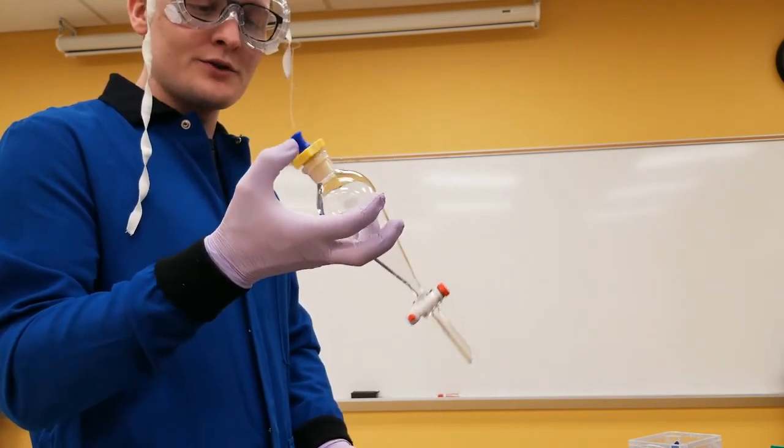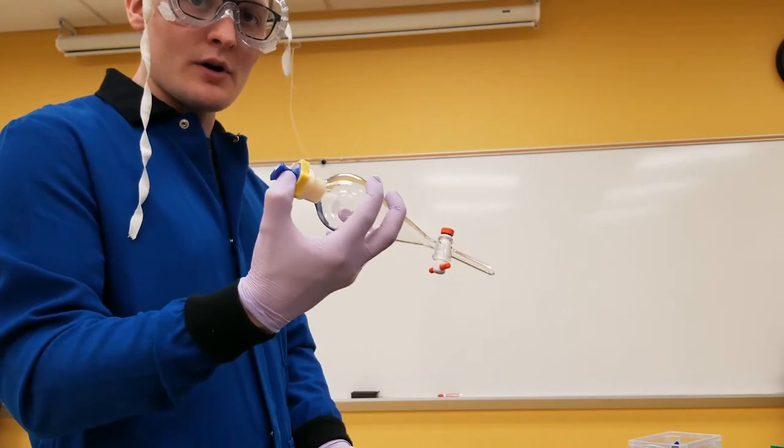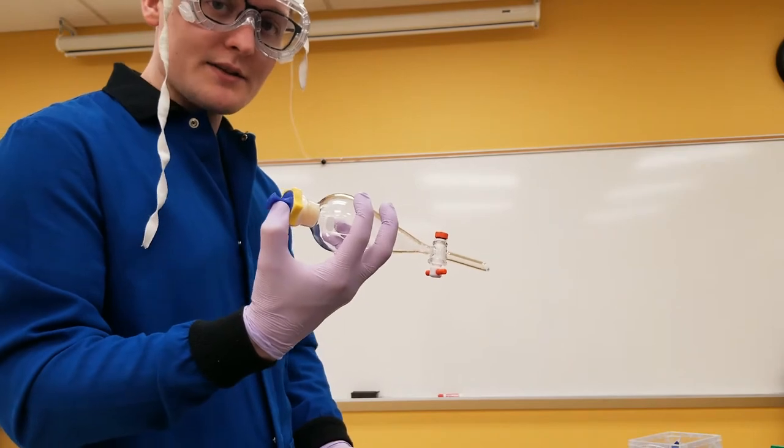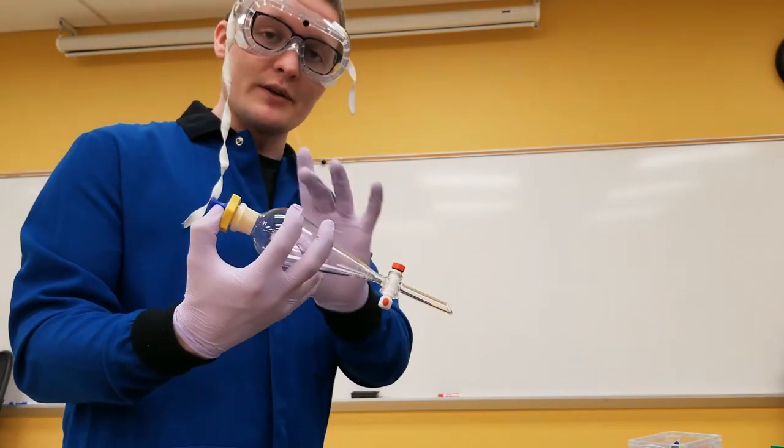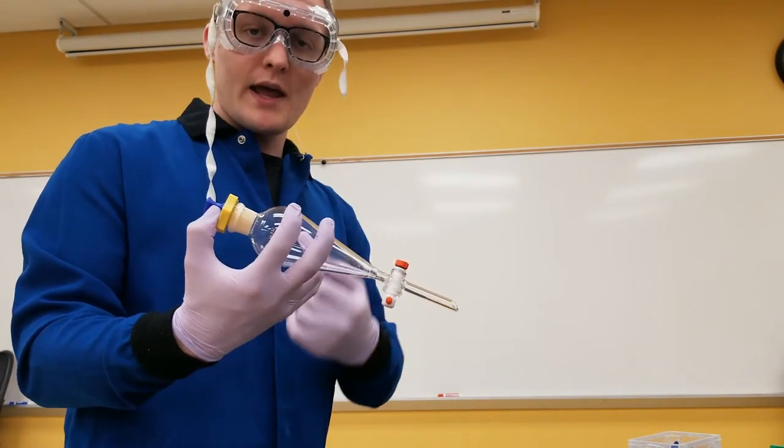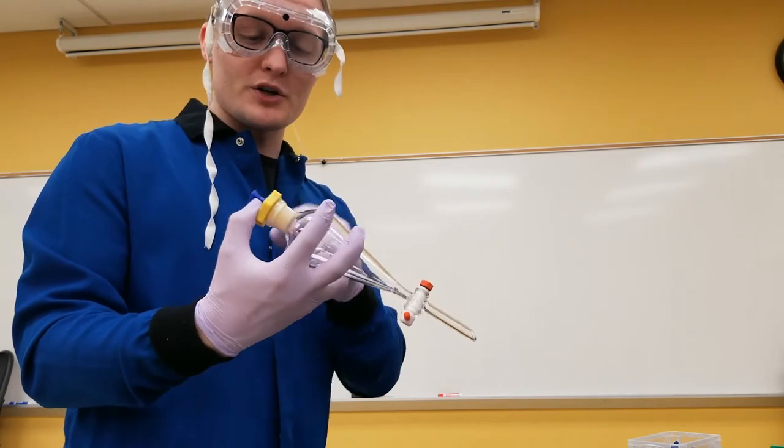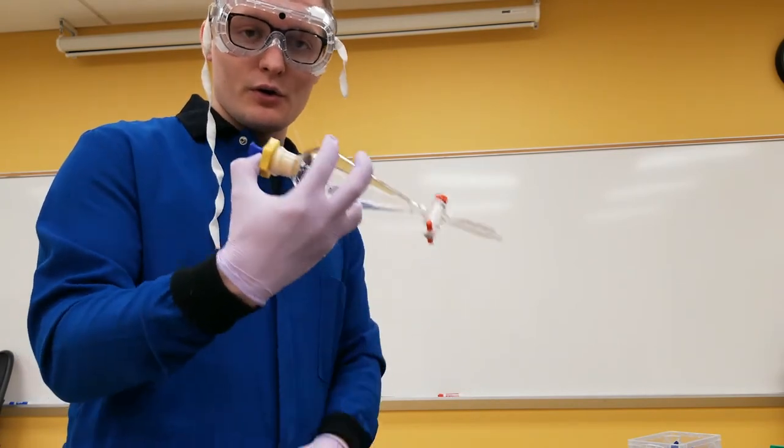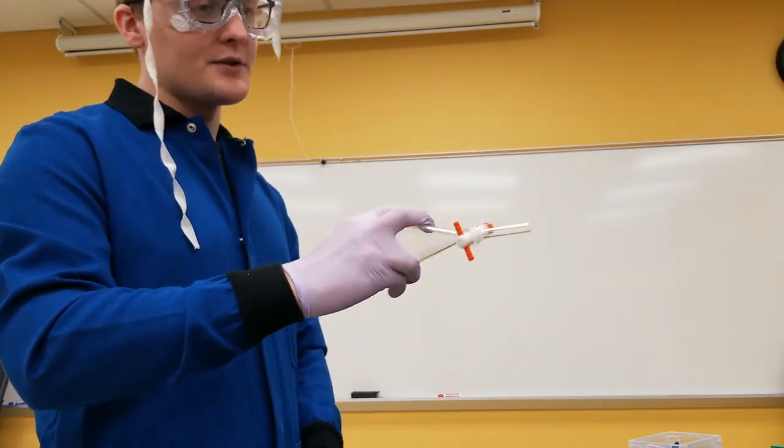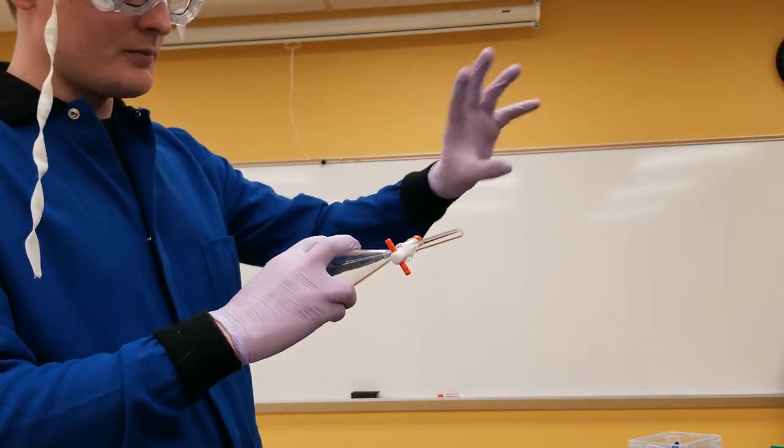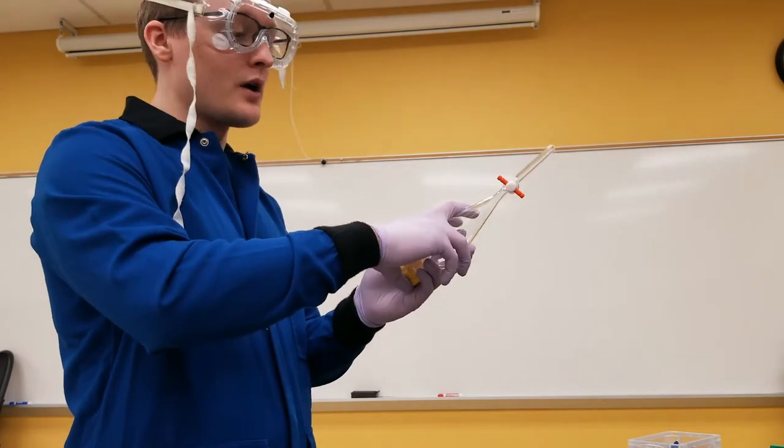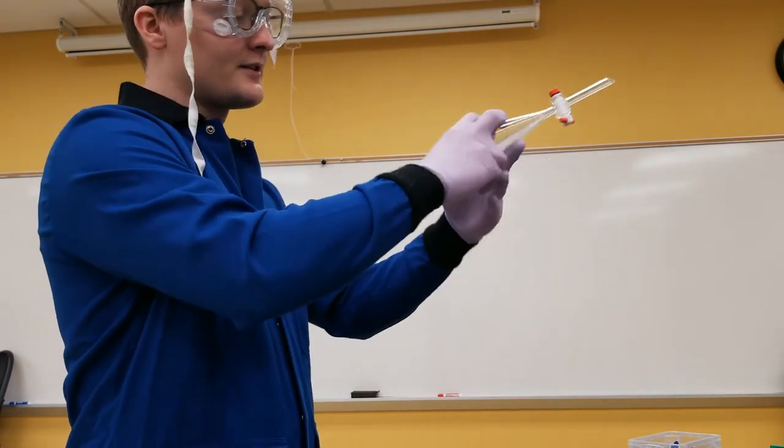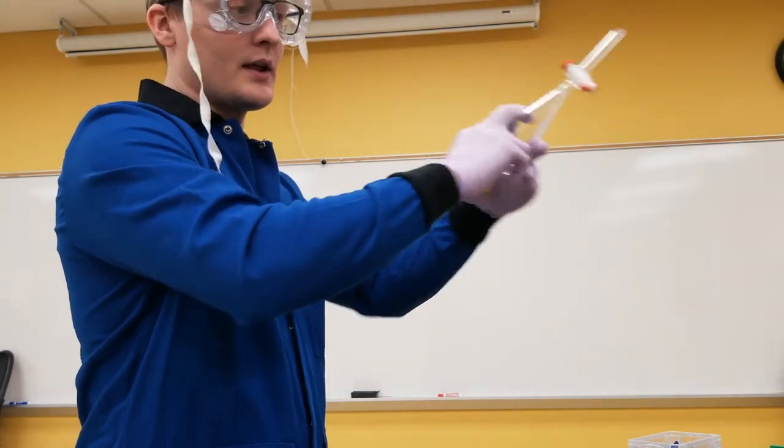I'm going to brace the stopper with my thumb because as you shake, depending on what you have in here, you can actually build up pressure in the chamber. And when you build up too much pressure, this can go popping off. So you're going to hold it with your thumb. The way that we shake is in a fume hood, which is going to be right here for right now. I'm actually going to invert it and I'm going to shake it like this, or more stably, like this.